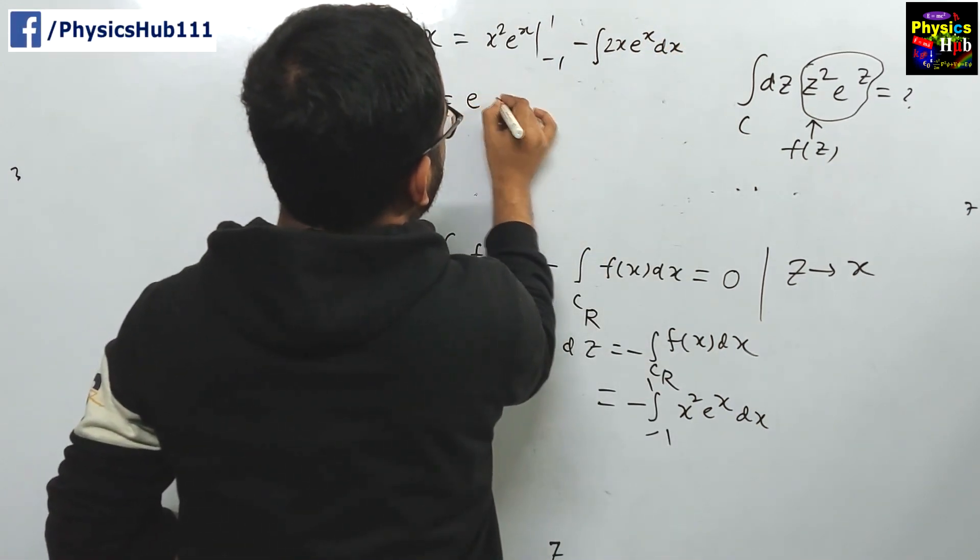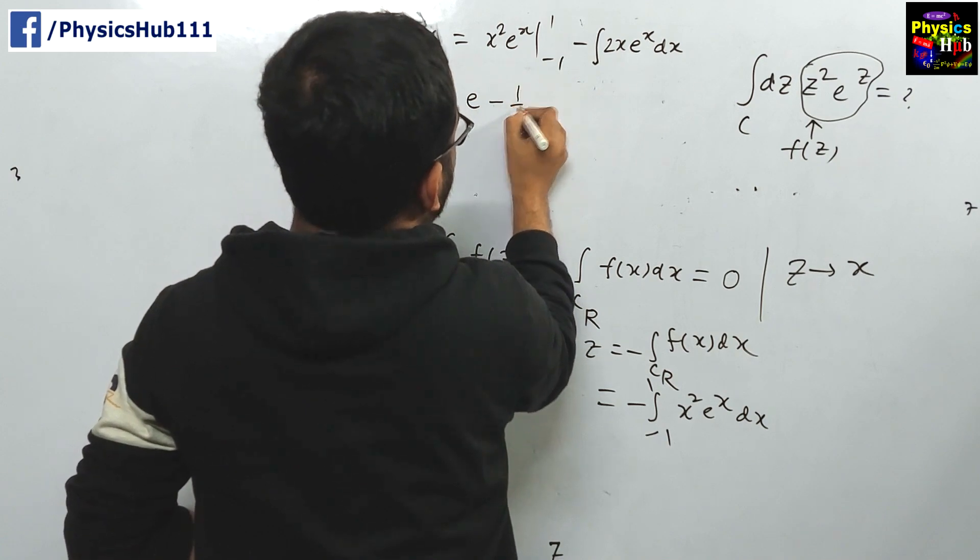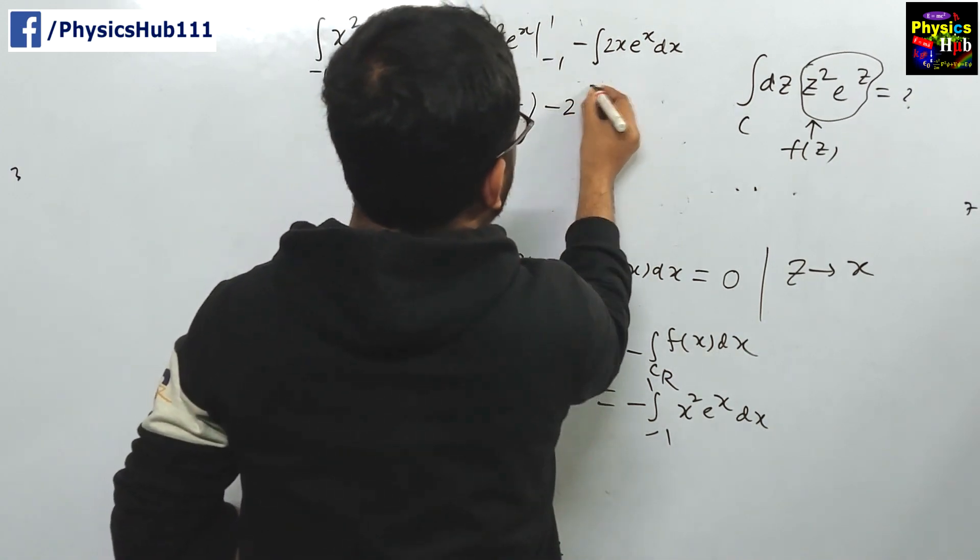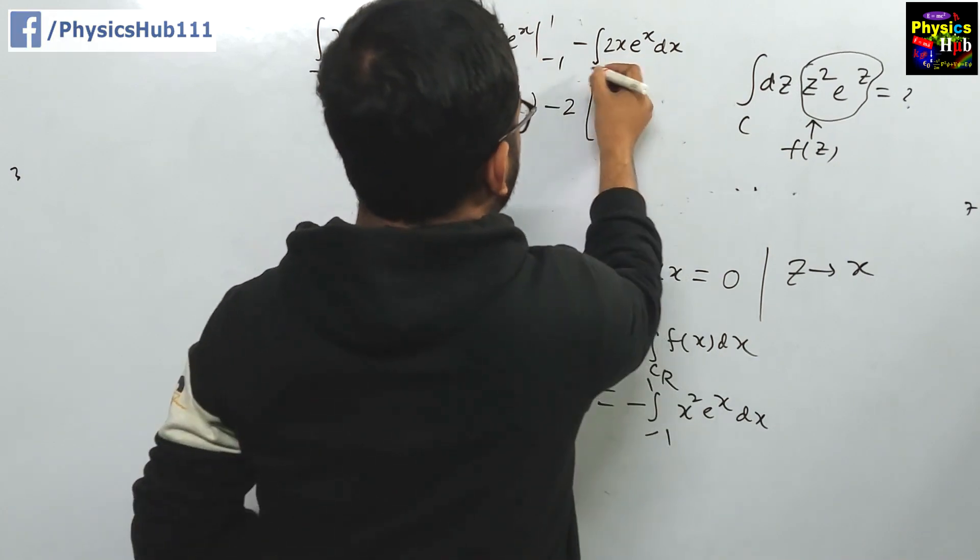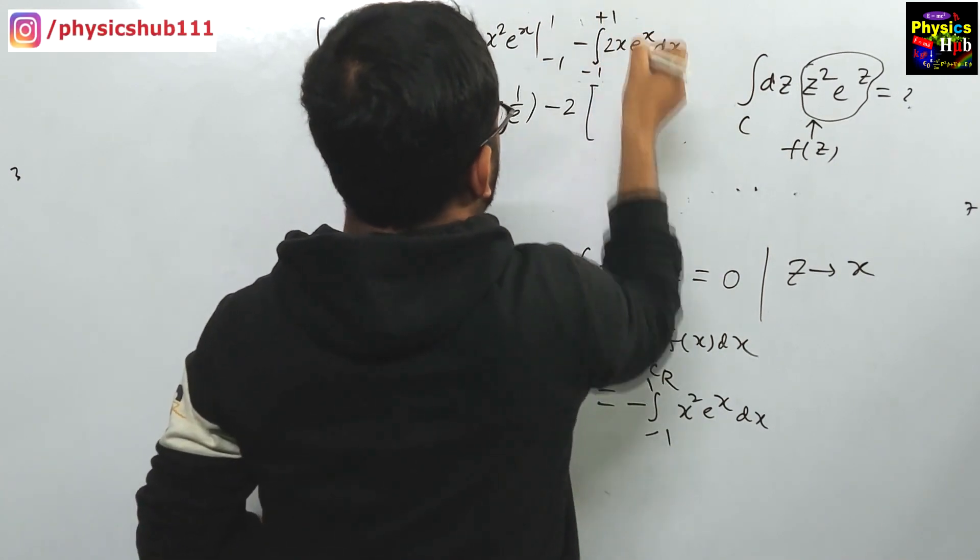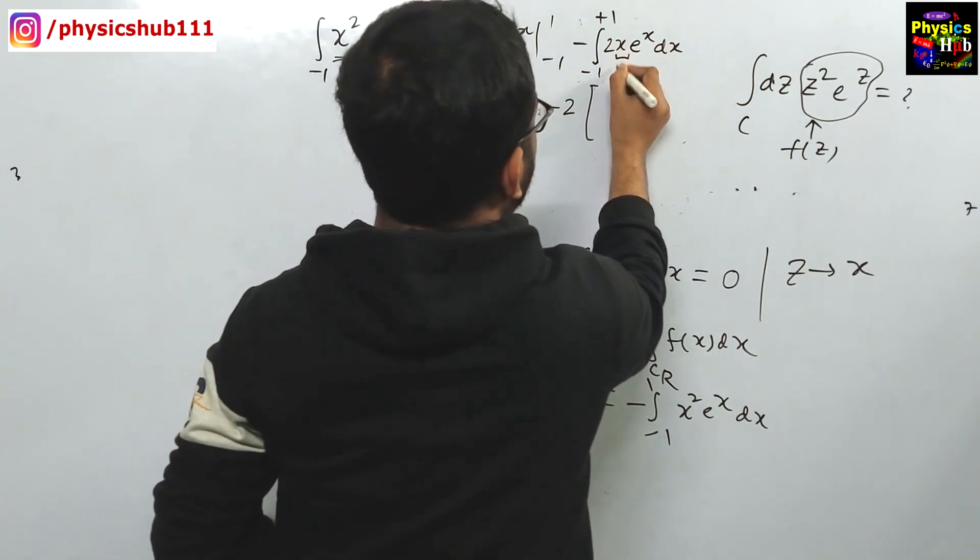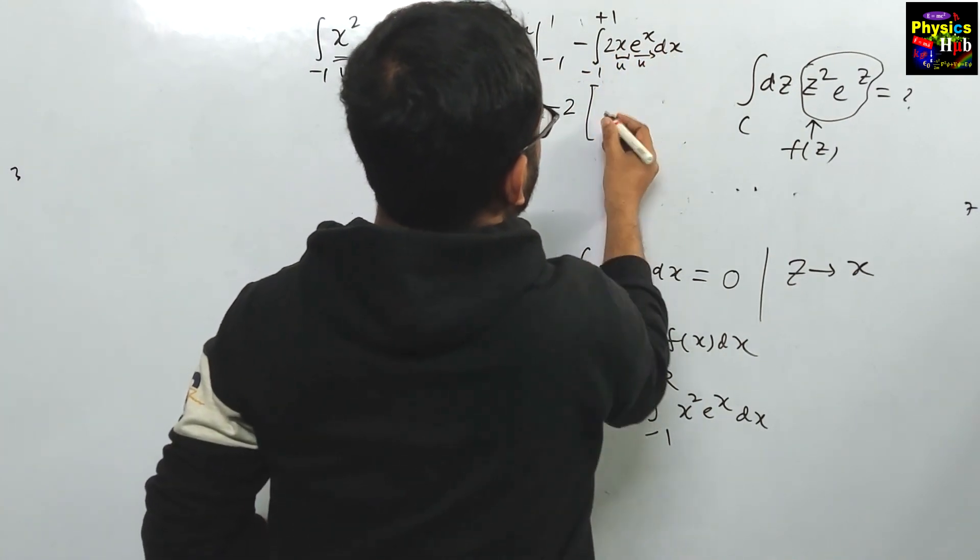This is equals to e minus 1 upon e. Let us keep it as it is, minus 2 times x e^x. The integration is -1 to +1 here also. Again, we can consider it as u, you can consider it as v.